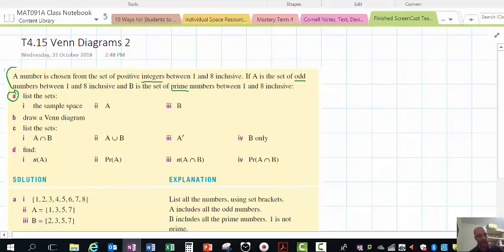We saw in the previous video that the sample space is basically all the numbers that are relevant. And that would be 1, 2, 3, 4, 5, 6, 7 and 8.